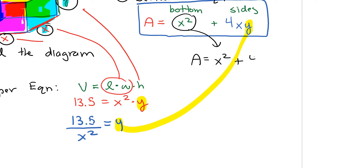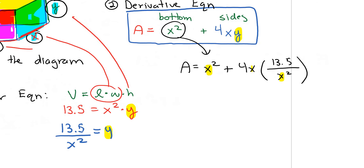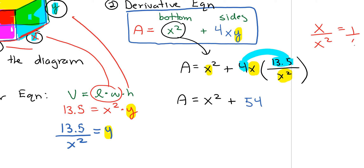Rewriting the derivative equation with y substituted: area equals x squared plus 4x times (13.5 divided by x squared). Simplifying: 4 times 13.5 is 54, and x divided by x squared is 1 over x, so the equation becomes x squared plus 54 over x. I would write that as x squared plus 54 times x to the power of minus 1, because your derivative will be much easier to take in that form.